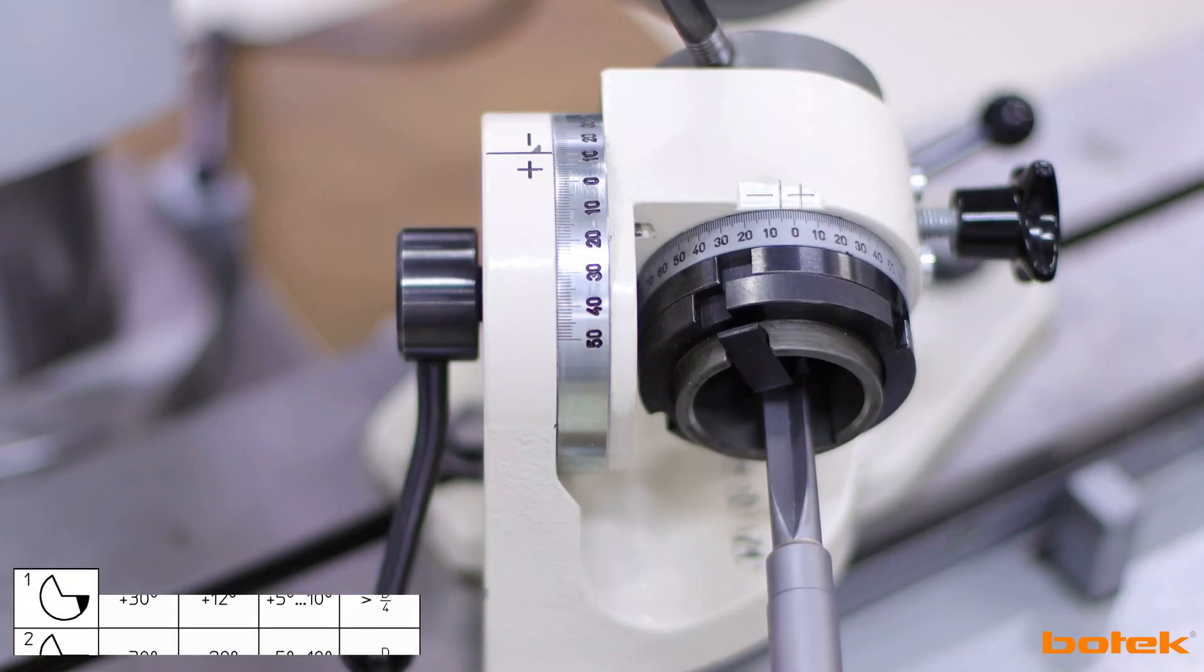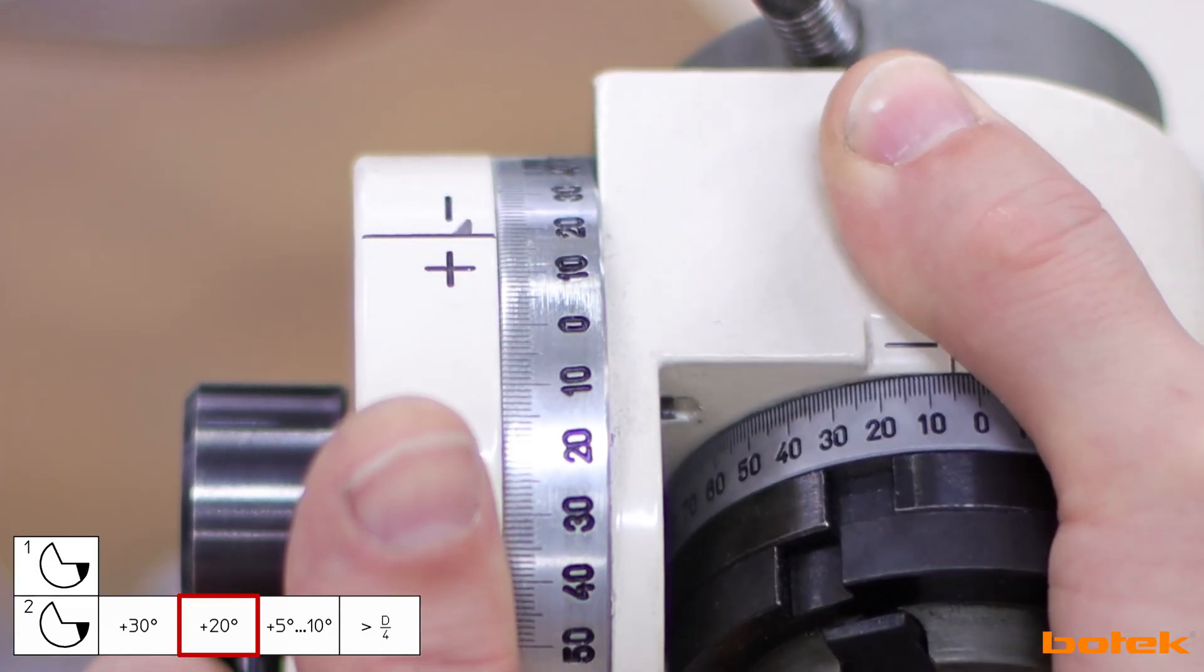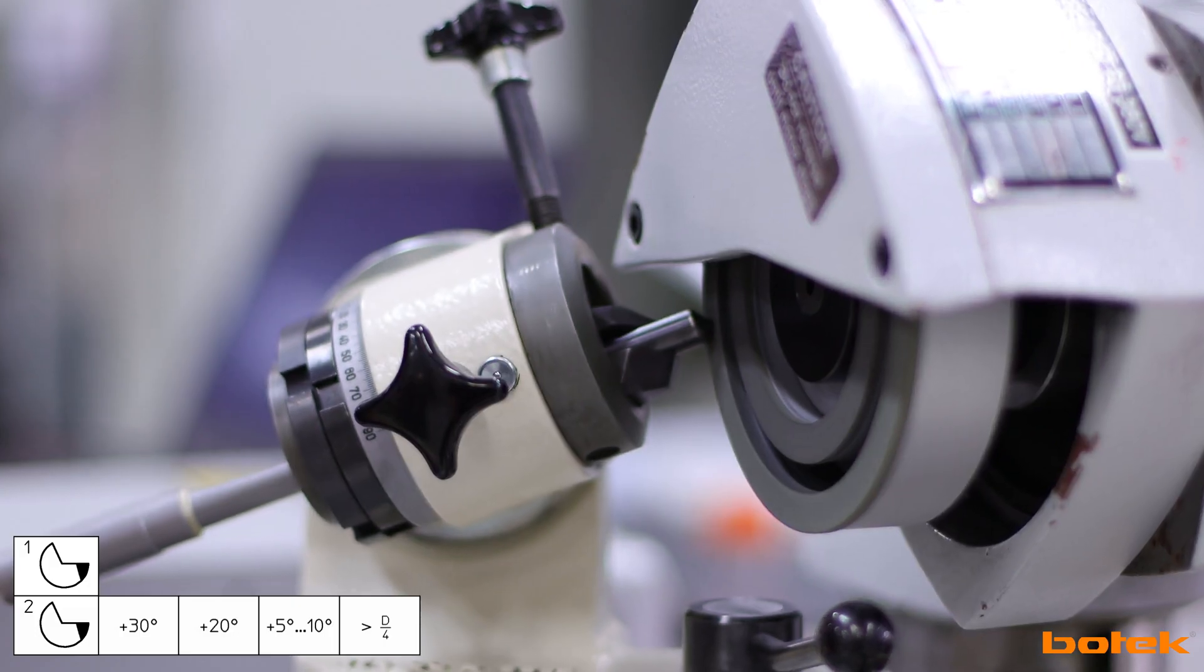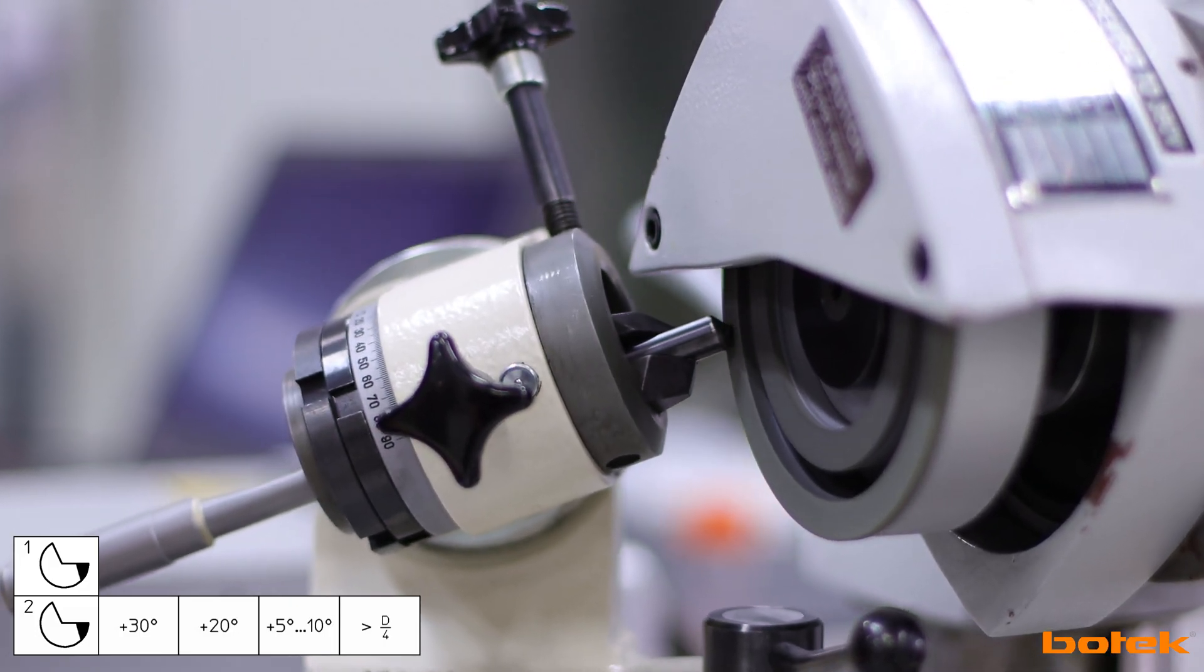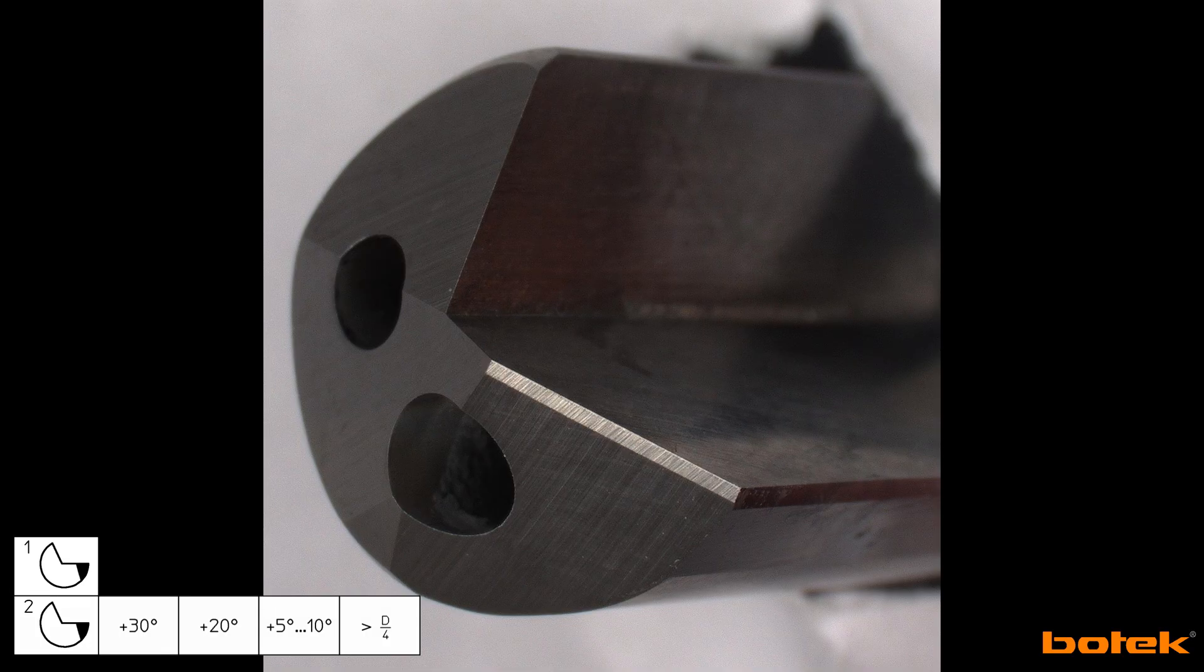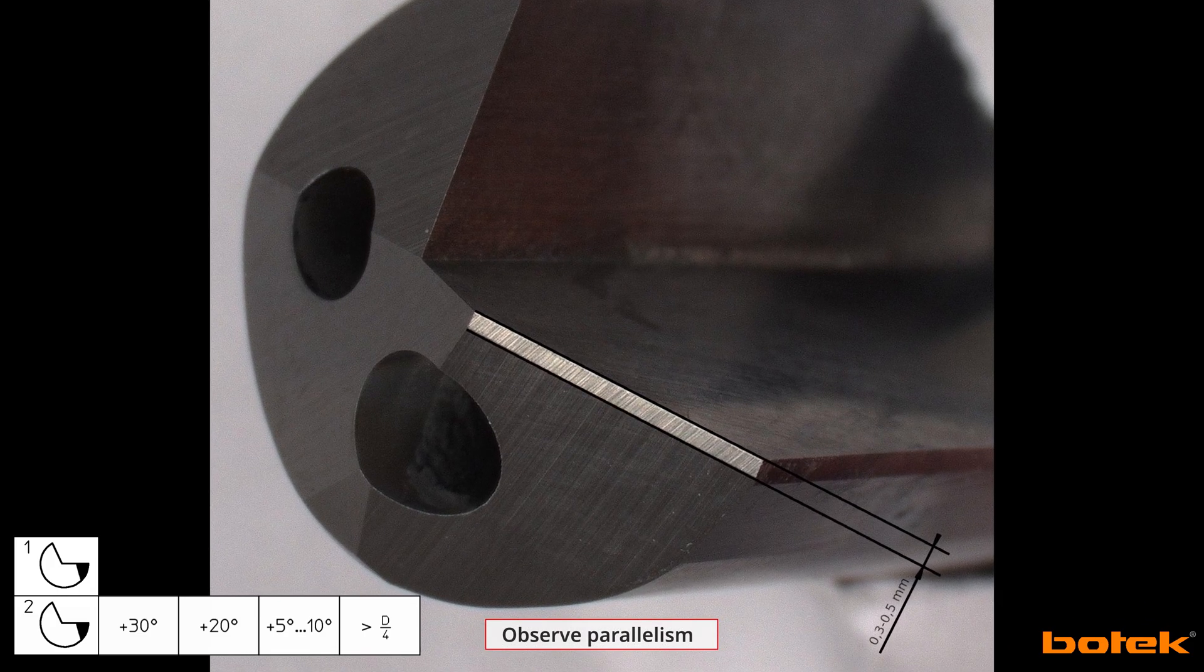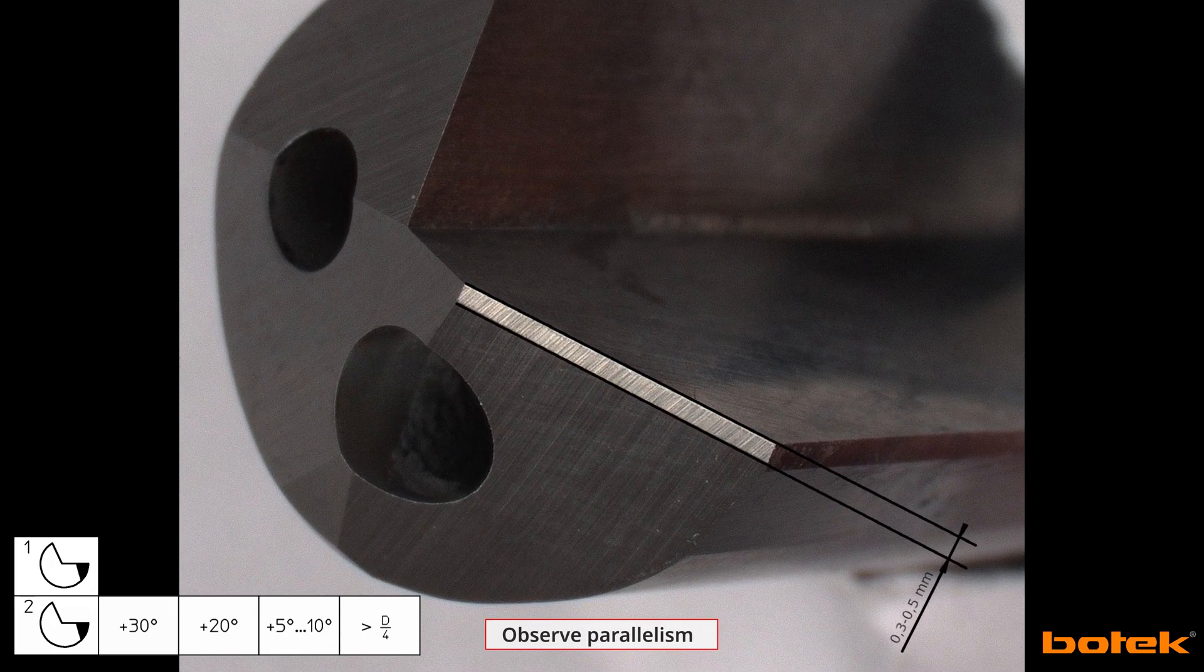Now add the second clearance angle using the roughing wheel. Grind the second clearance angle until a cutting bevel of 0.3 to 0.5 mm is formed.